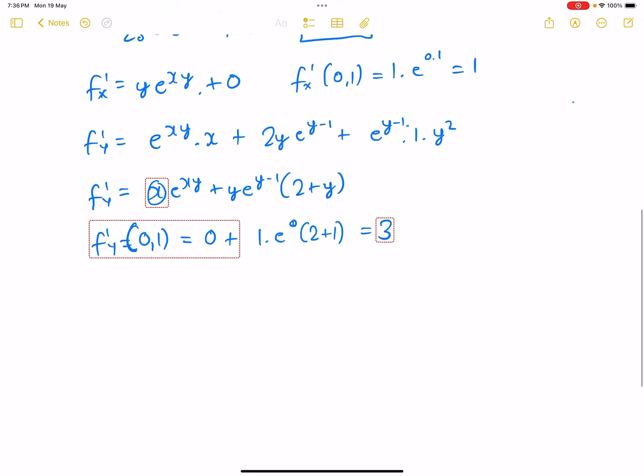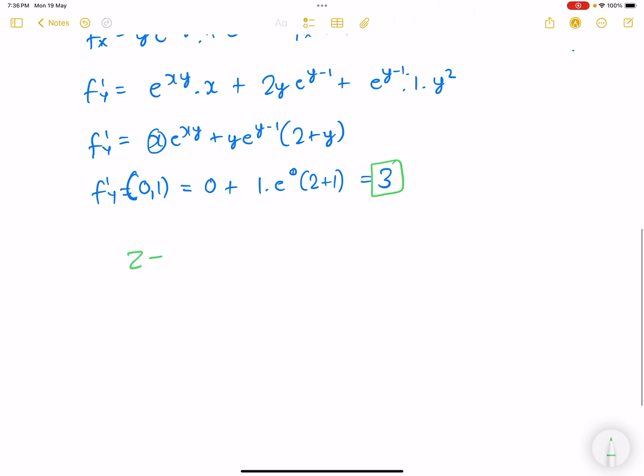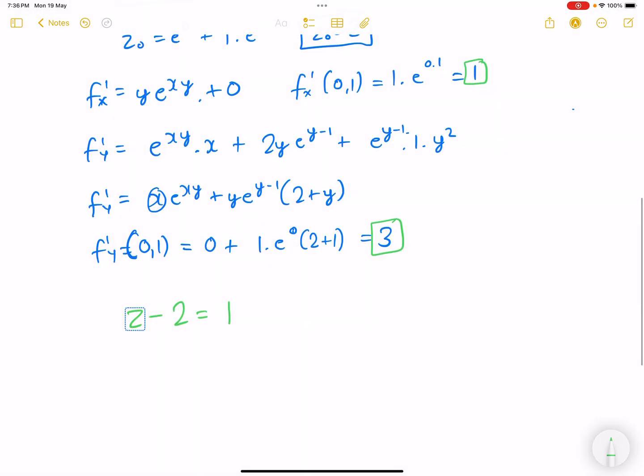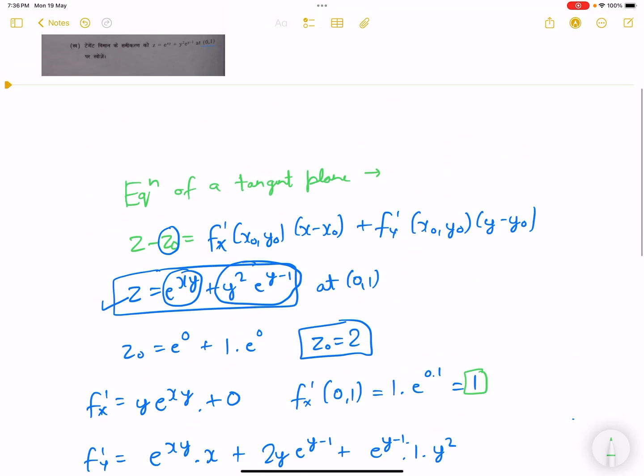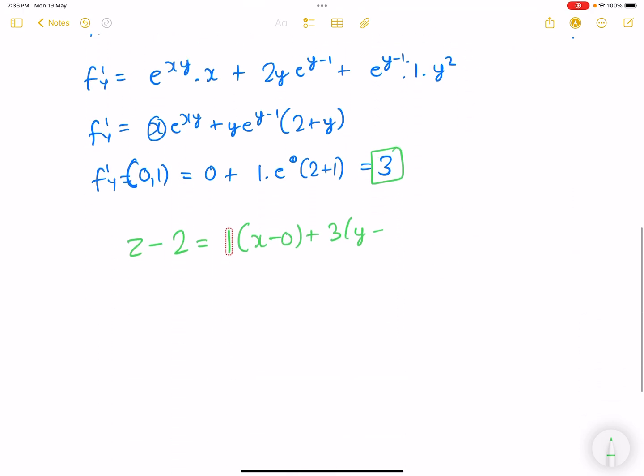So if you see, our equation would become: f'ₓ is 1, f'ᵧ is 3, so z minus z₀ was 2, equals f'ₓ which was 1 times x minus 0 plus 3 times y minus 1. On simplifying this, x plus 3y minus 3 plus 2, finally you will get the answer z equals x plus 3y minus 1.